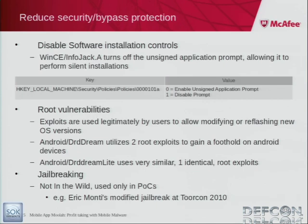Other ways of bypassing protection and getting further infection: on Windows Mobile, malware disables the silent installation setting so you don't even know you're being infected - just a registry setting change. Next is root vulnerabilities - how to stay on the device, opening it up so malware can persist, like having a rootkit on a Unix or Linux box. Root exploits get you onto any Android device. Droid Dream did it, Droid Dream Lite does it. Interestingly, attackers aren't writing their own exploits - they're not wasting time looking for exploits when they can use existing ones. They're writing malware that makes them money today.